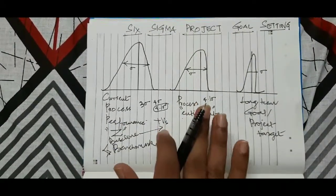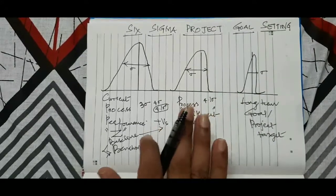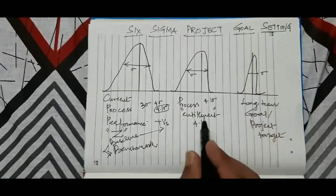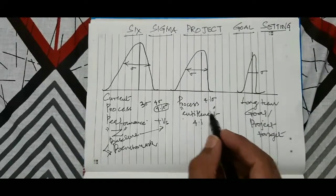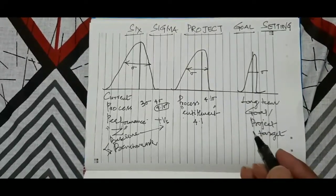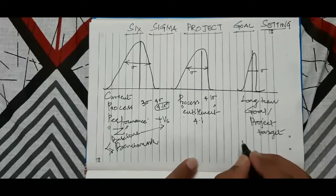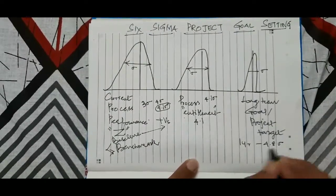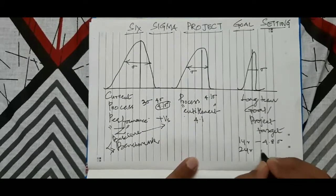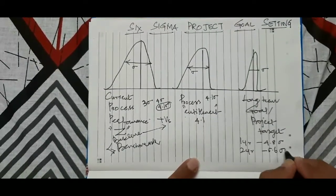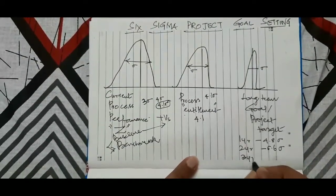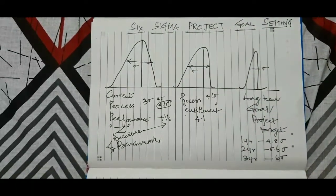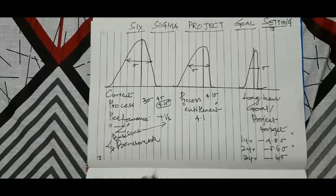Once that is done, have a control plan in place and monitor it, then go for the long-term goal. For example, if my process is at four sigma and I want 25% improvement, I might set year one at 4.8 sigma, year two at around 5.6 sigma, and by year three aim for a minimum of six sigma and a maximum of 6.4 sigma.